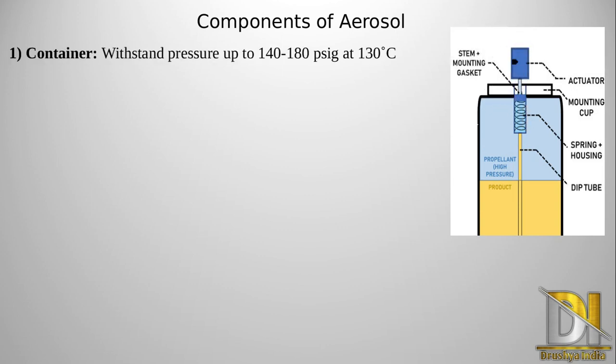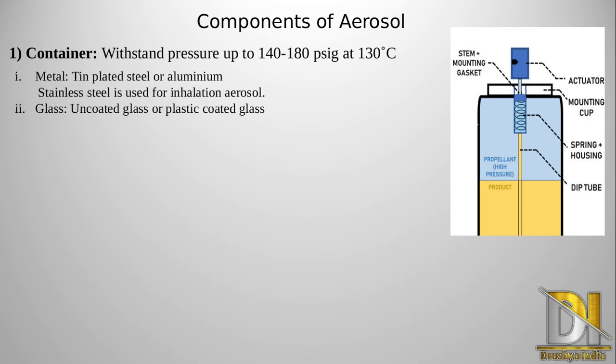Now we will see about various components of aerosol. The first one is the container. One of the characteristics that the container should follow is it should withstand pressure up to 140 to 180 PSIg at 130 degrees Celsius. Containers are generally made up of metal — specifically tin-plated steel or aluminium. In the case of inhalation aerosol, stainless steel is preferred.